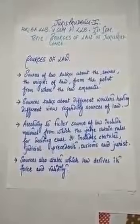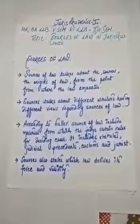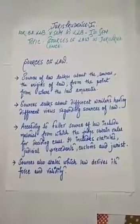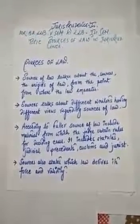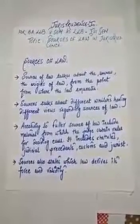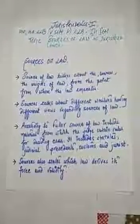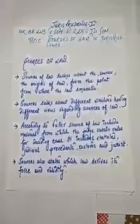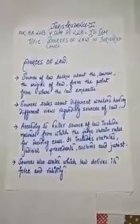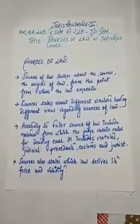Sources of law refers to the origins from where the law emanates. Different writers hold different views regarding sources of law. According to Fuller, sources of law include material from which the judge obtains rules for deciding cases. It includes statutes, judicial precedents, customs, and jurists. Sources of law also states which law derives its force and validity.